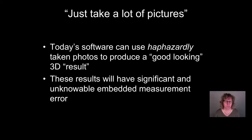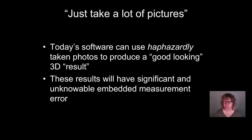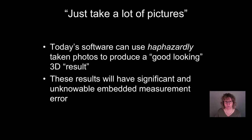One thing we've seen in recent years is that because the software has gotten so much easier to use and better, sometimes people give what we think is bad advice — that you just go out and take a bunch of pictures. And it's true that if you just walk around and take a bunch of pictures, you can get a 3D model that probably even looks good, especially with the texture map on it. But the results will have significant error in them, and that error is not quantifiable — it's an unknowable amount of error. So if you're doing scientific imaging or historic documentation, you really need to follow the rules to get good, reproducible data.